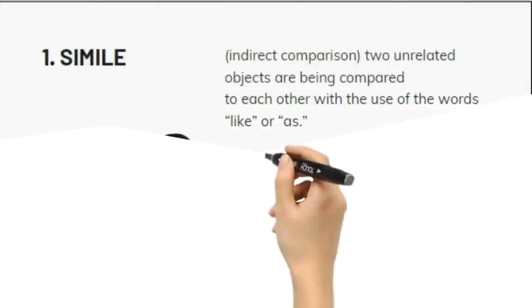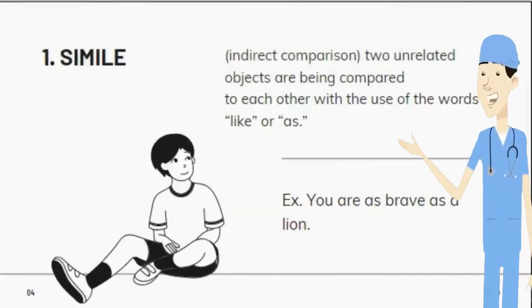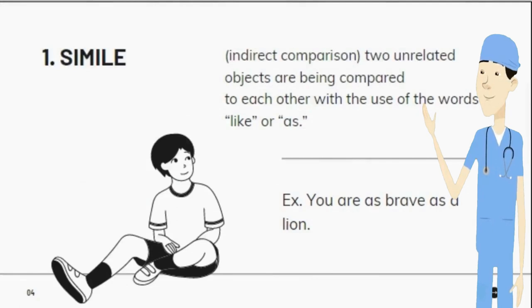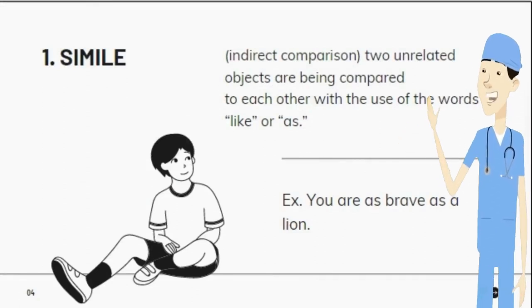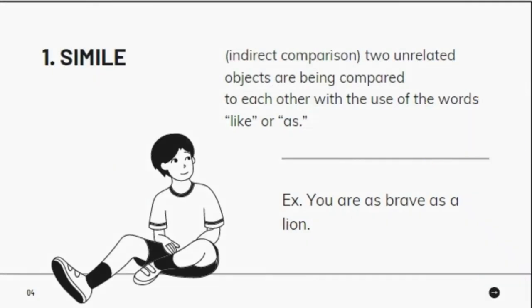1. Simile — Indirect Comparison. Two unrelated objects are being compared to each other with the use of the words 'like' or 'as.' Example: You are as brave as a lion.